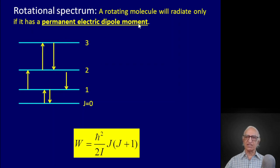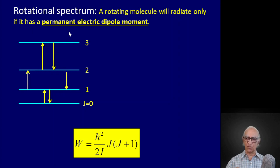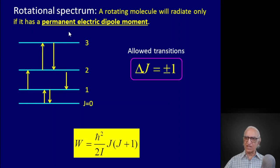Not all molecules can radiate according to this picture. For a rotating molecule to radiate, it has to have a permanent electric dipole moment. You should accept this as an axiom: a molecule cannot radiate unless it possesses a permanent electric dipole moment. The allowed transitions according to quantum mechanics must satisfy the selection rule delta j equals plus or minus 1. Therefore a molecule from level j=2 can only jump to j=3 or j=1 — it cannot jump from 2 to 0 or 2 to 4.